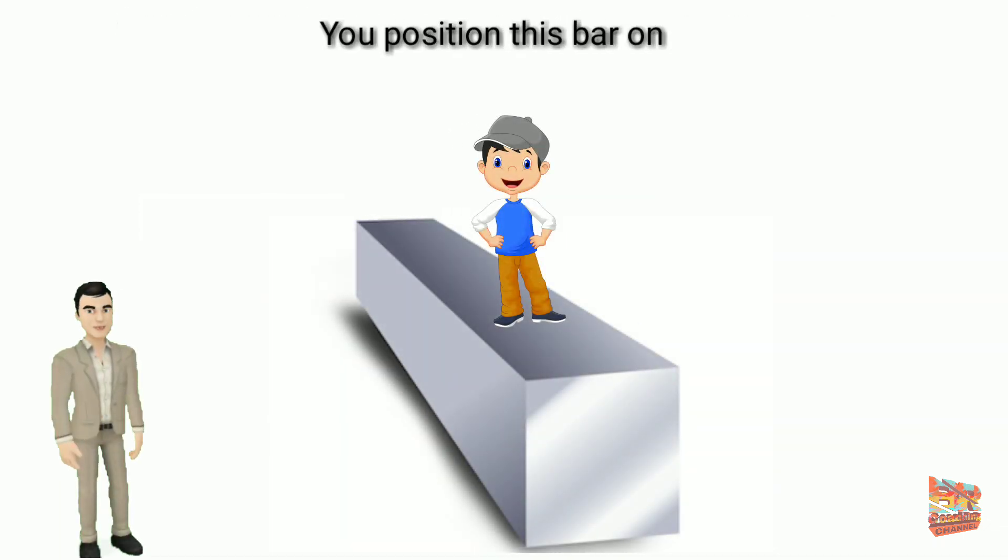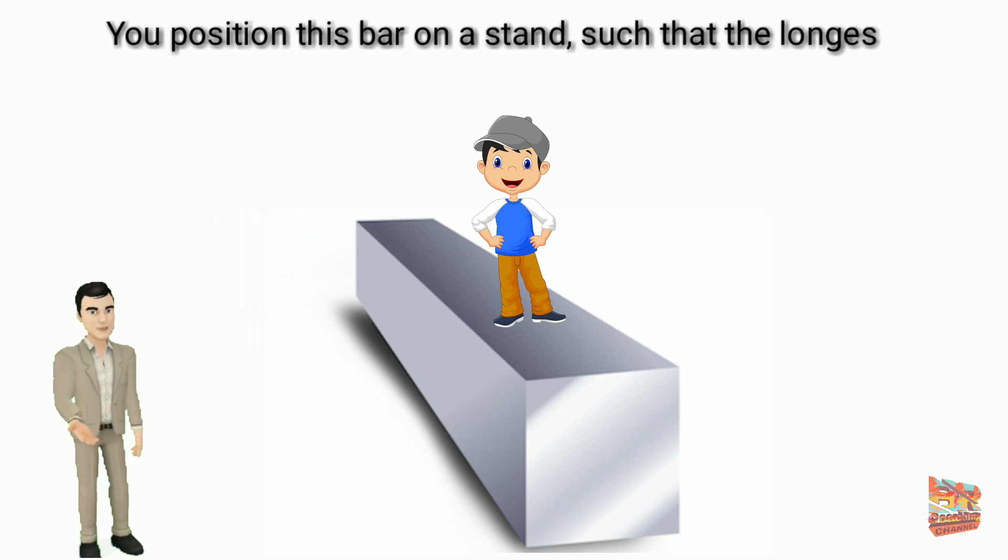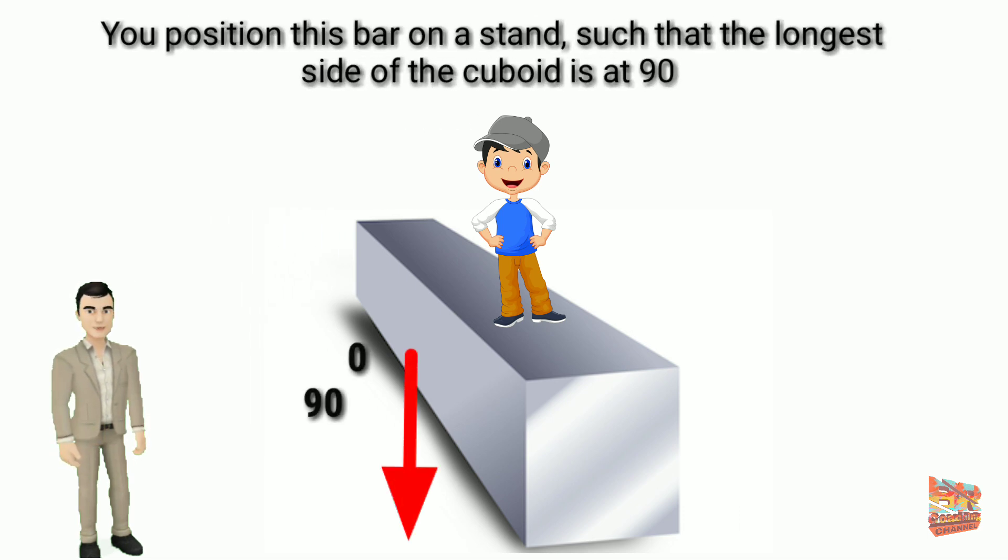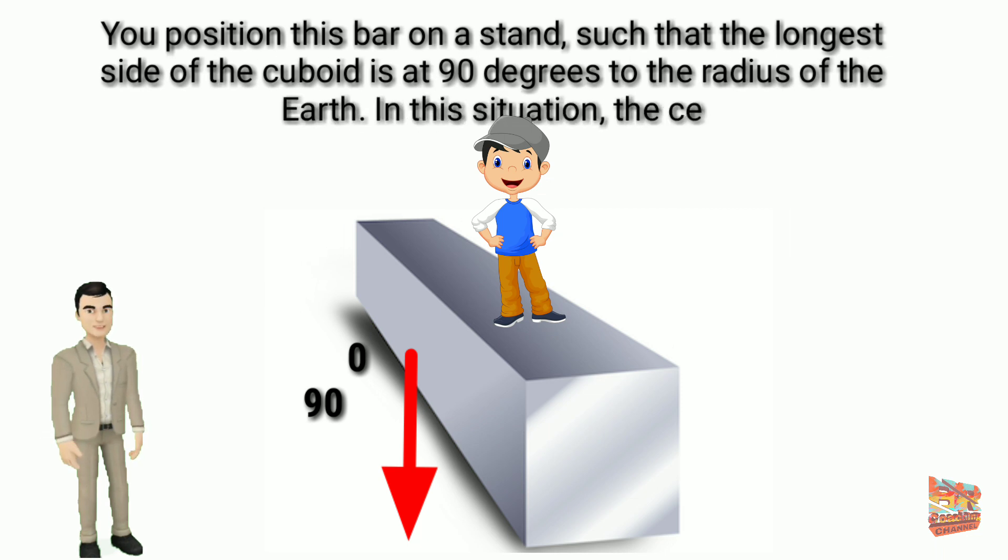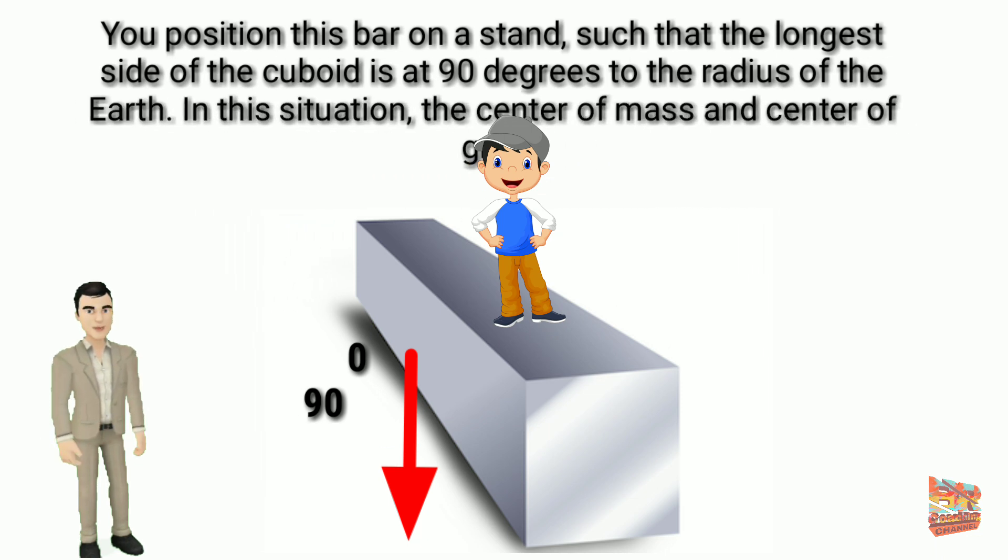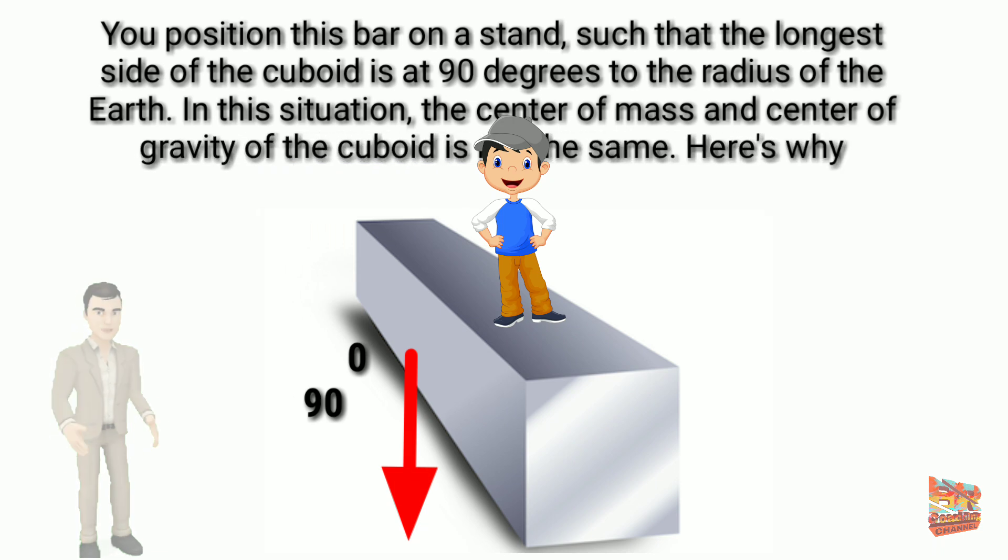You position this bar on a stand, such that the longest side of the cuboid is at 90 degrees to the radius of the Earth. In this situation, the center of mass and center of gravity of the cuboid is not the same. Here's why.